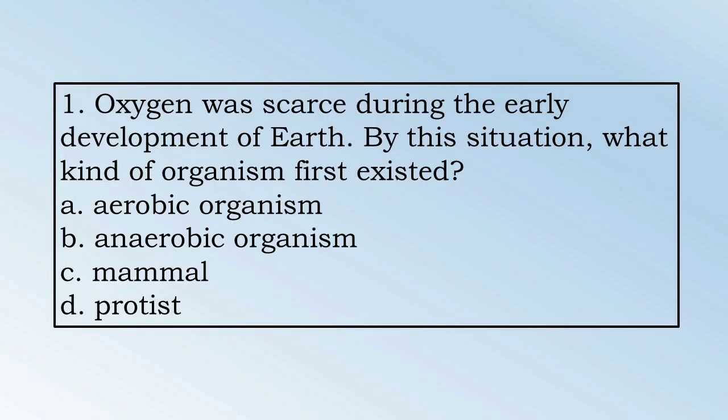Number 1. Oxygen was scarce during the early development of Earth. By this situation, what kind of organism first existed? A. Aerobic organism, B. Anaerobic organism, C. Mammal, D. Protist.